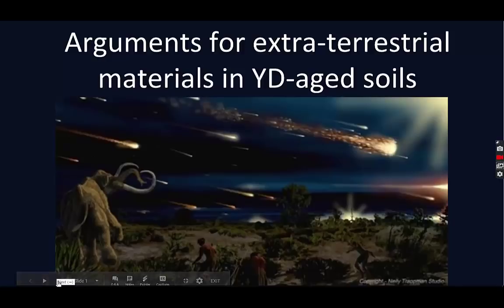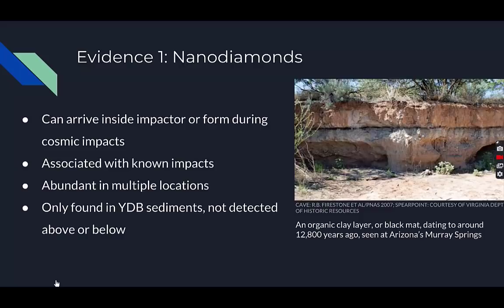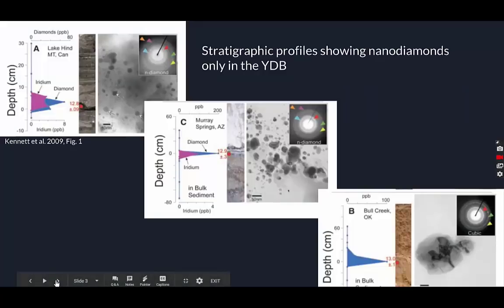Examining sediments near the Younger Dryas boundary shows clear evidence of materials that could only have been created by extraterrestrial impact. One such material is nanodiamonds — tiny diamonds that can either arrive inside the impactor itself or form during the collision with Earth's surface. They have been used as evidence for other known impact events. They have been found in multiple locations across the southwestern United States, all in the same boundary layer. Three figures from Kennett et al. show stratigraphy of the Younger Dryas boundary sediments, demonstrating high concentrations of nanodiamonds at the boundary layer with no nanodiamonds present during any other period — strong evidence for the impact hypothesis.